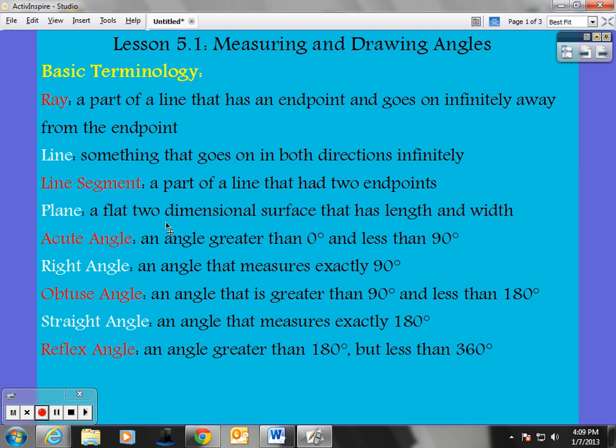So a line segment and line appear to be similar, but a line segment has a definitive or set end and beginning, whereas a line goes on infinitely in both directions. But a line can also have several numerous points. There's no real set term of how many points you'd have on it.